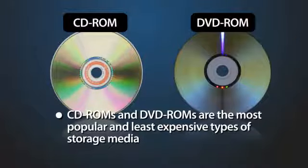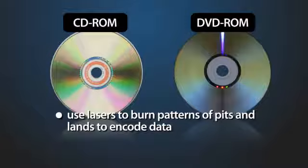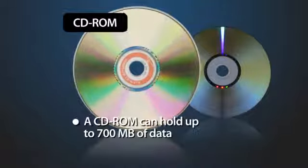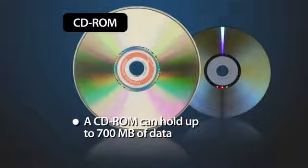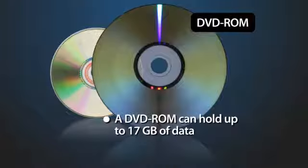CD-ROMs and DVD-ROMs are the most popular and least expensive types of optical disk storage media. They use lasers to burn patterns of pits and lands to encode data. A CD-ROM can hold up to 700 megabytes of data, while a DVD-ROM can hold up to 17 gigabytes.